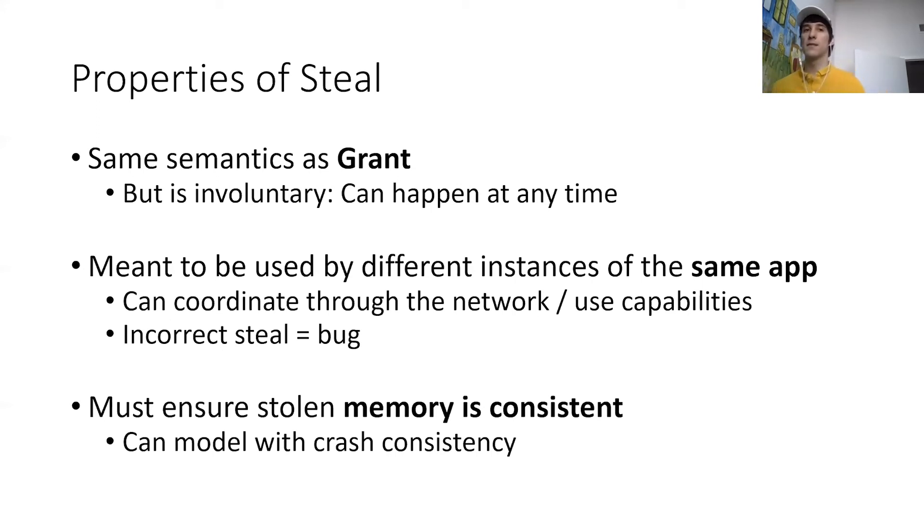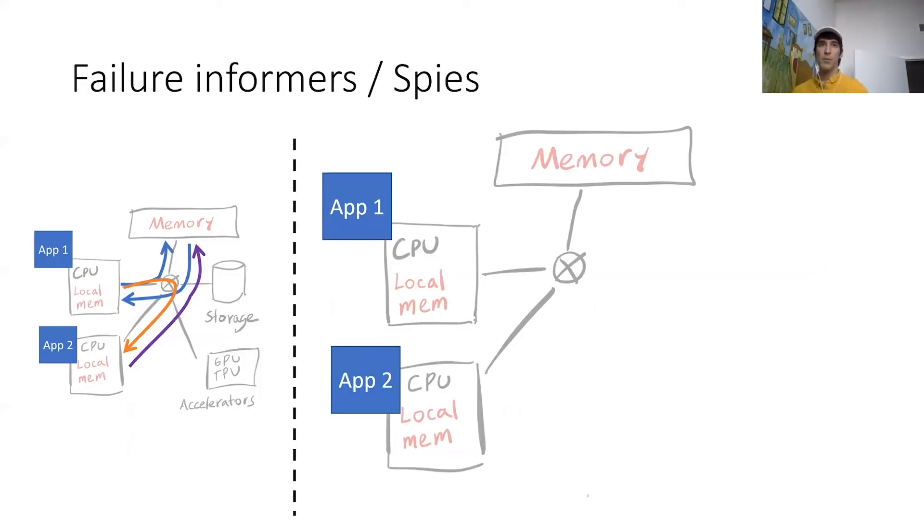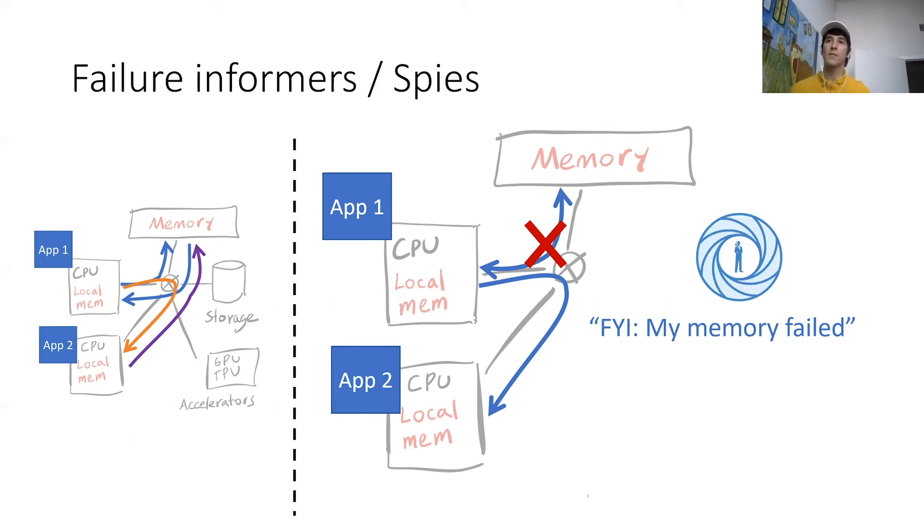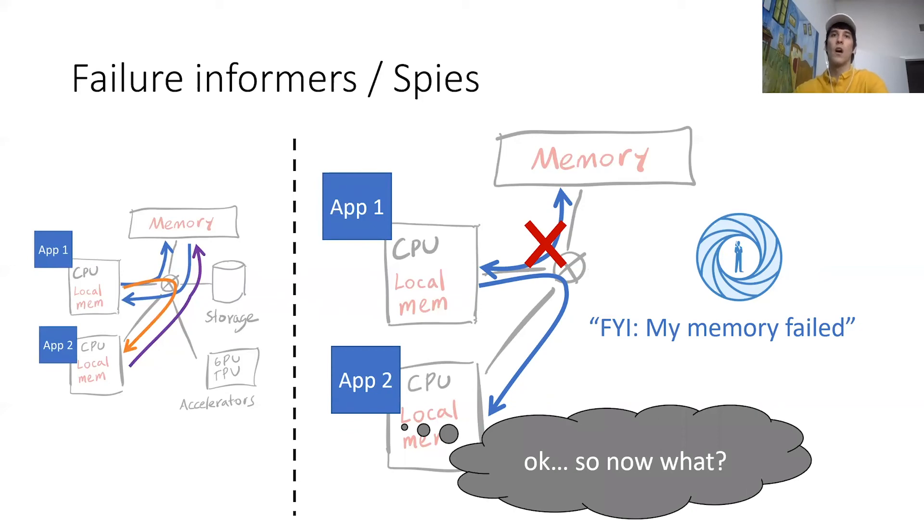So the last abstraction that we propose are failure informers or spies. For example, suppose that app1 is performing some load operation and suddenly the memory node crashes. At this point, app1 is in trouble. What it can do, however, is it can actually inform other processes or other applications that its memory has failed and that it is soon going to crash. And what we think is that this information can actually help other applications figure out what to do in this situation. So we think this is useful in some cases, and I'm going to describe some applications in a few slides.